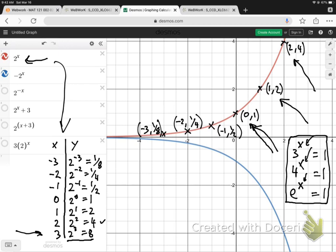Right, let's go into our negative exponents. So when x equals negative 1, well, that means 2 to the negative 1, which is the same as 1 over 2 to the positive 1, which is why we get the half. So that's why that is on the graph right there.